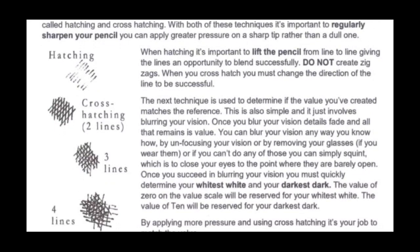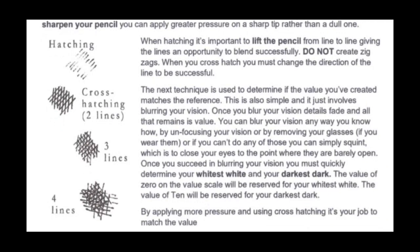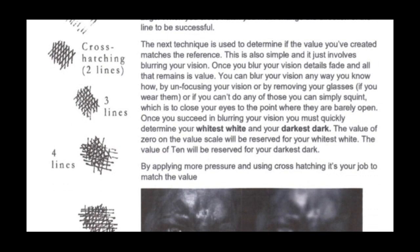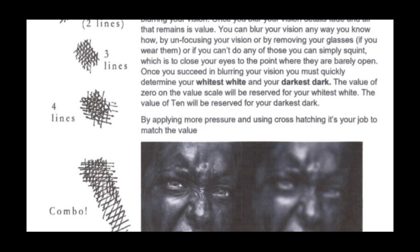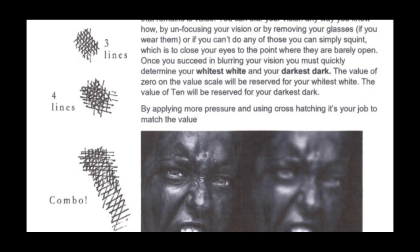You can apply greater pressure on a sharp tip rather than a dull one. When hatching it's important to lift the pencil from line to line, giving the lines an opportunity to blend successfully — do not create zigzags. When you cross-hatch you must change the direction of the line to be successful. The next technique is used to determine if the value you've created matches the reference — this involves blurring your vision. Once you blur your vision, details will fade and all that remains is value. The value of zero on the value scale will be your whitest white; the value of ten will be your darkest dark.